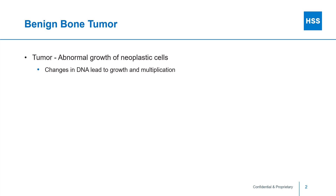A tumor is an abnormal growth of neoplastic cells. Neoplastic means new — new cells that have changes in their underlying DNA, which leads to their growth and multiplication into a mass known as a tumor.